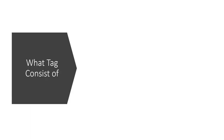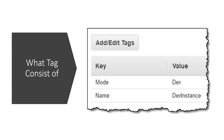Now let's see what a tag consists of. A tag is a key-value pair. The tag key is case-sensitive. You can have keys like cost center, environment, project, or module name, and give the respective value for each.